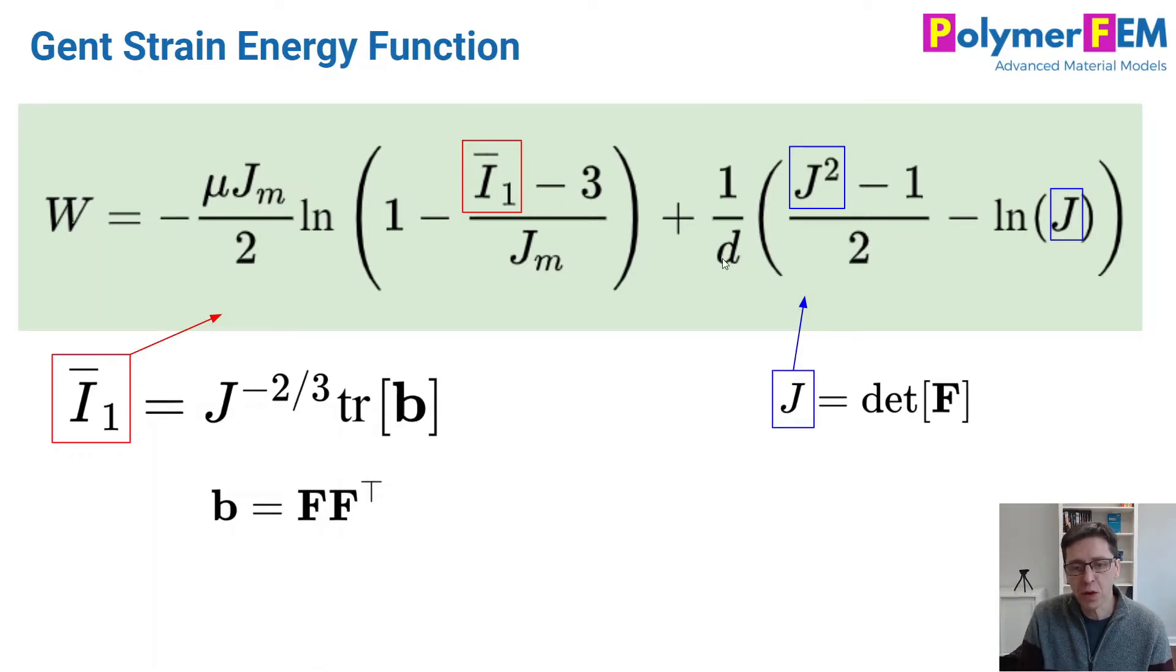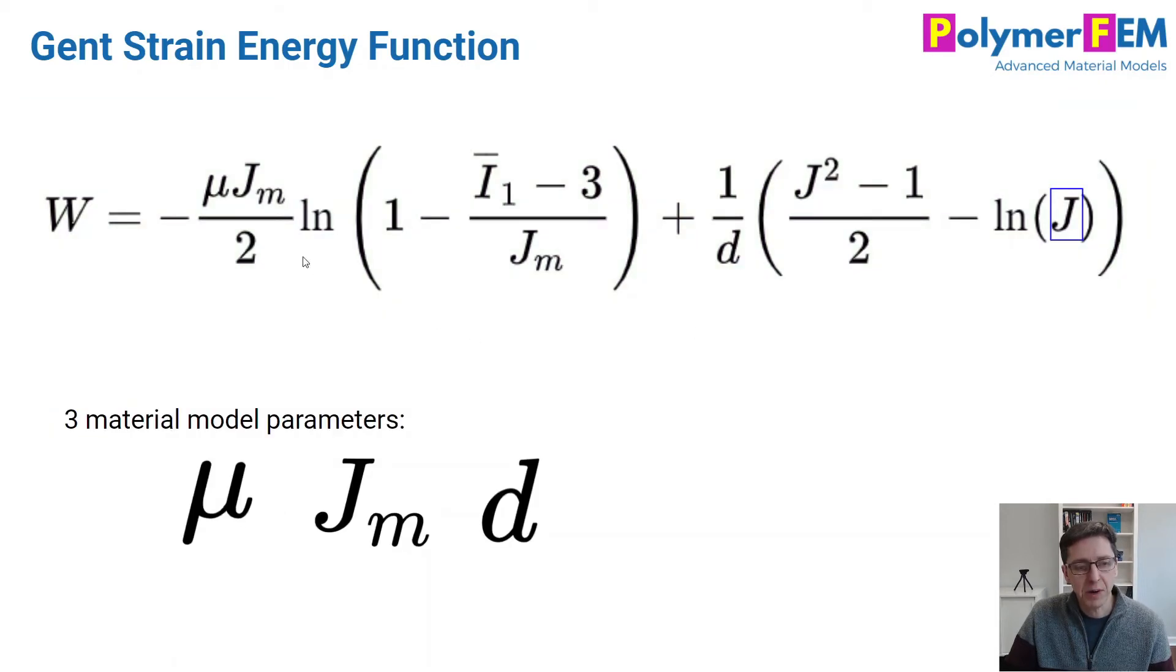D is the compressibility parameter for that. So it's a pretty simple I1-based hyperelastic model. And the material parameters, there are only three of them. There's the shear modulus, limiting chain extensibility, the value of I1 in the limit of that is here, and D is the compressibility. So these three parameters are all positive. This material is always stable because of that. There is no concern regarding the stability in this case.